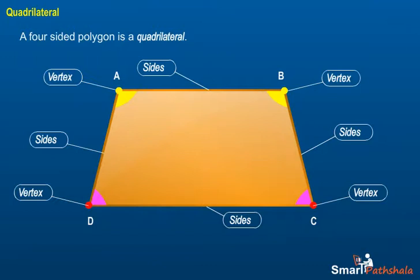Opposite angles are angle A and angle C, and angle B and angle D. Adjacent angles are angles A and B, B and C, C and D, and A and D.